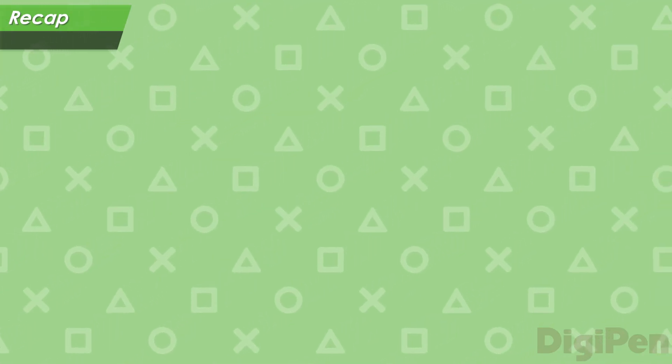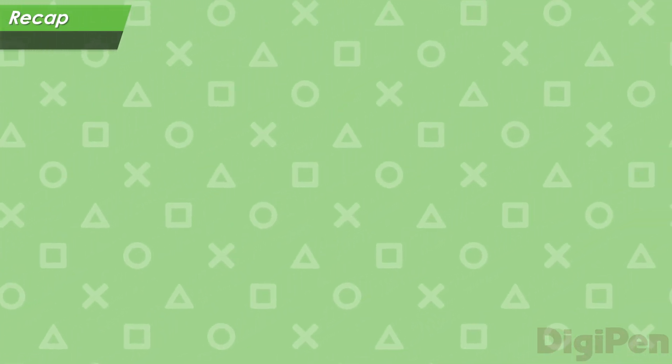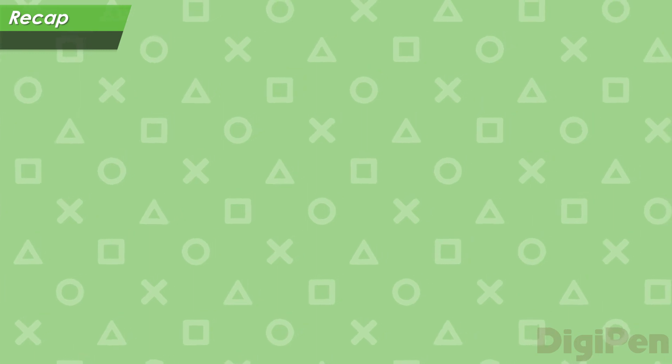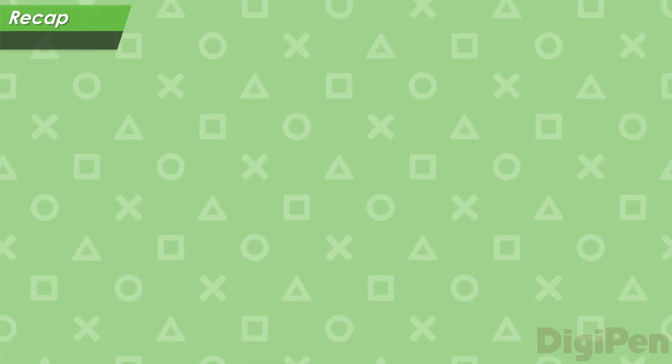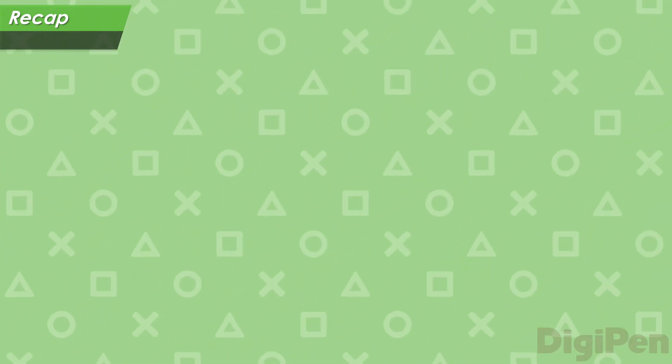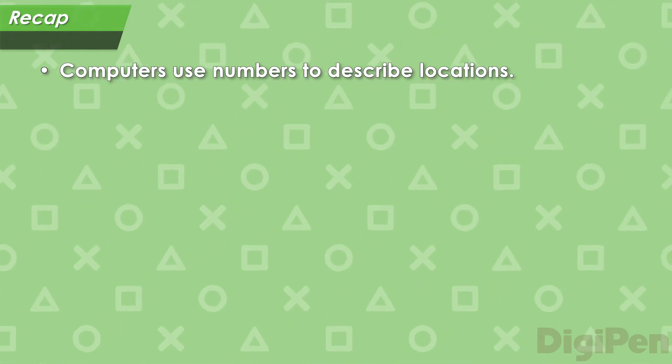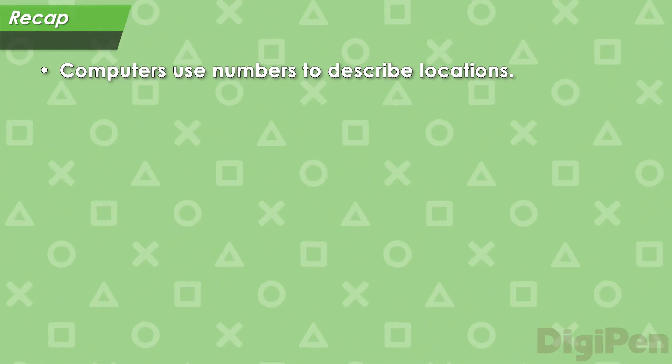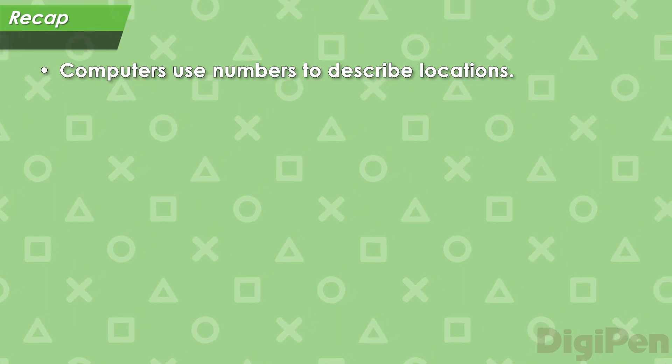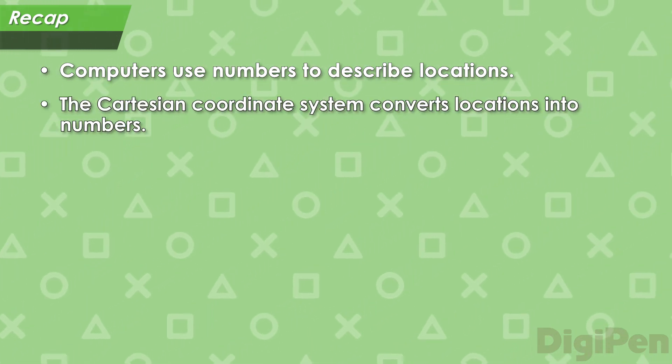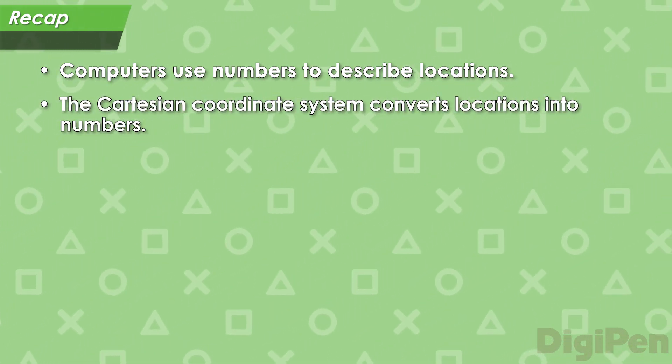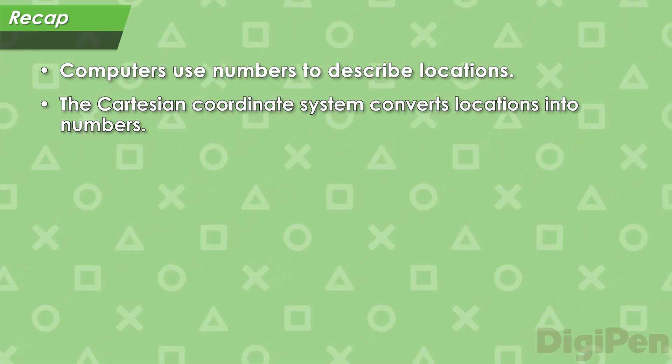Let's recap what we've covered in this video. First, we discussed that we can use ordinary words to say where something is, but a computer can't describe a location without using numbers. The Cartesian coordinate system allows us to convert a location into numbers that a computer can understand.